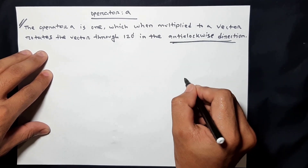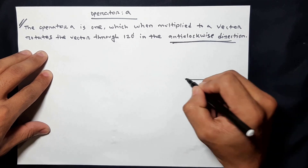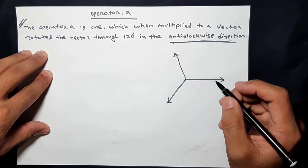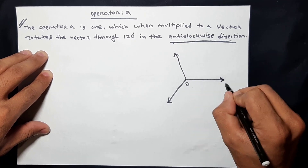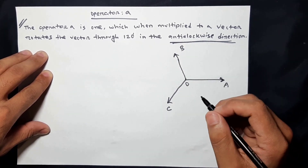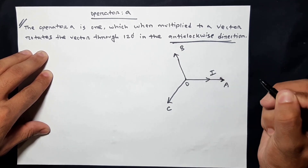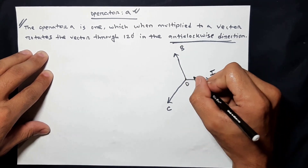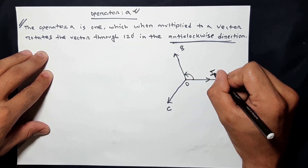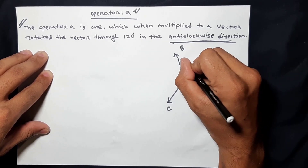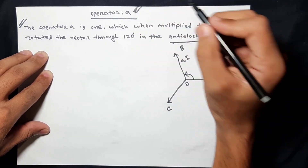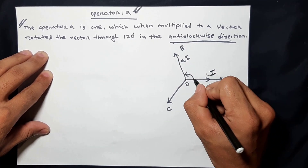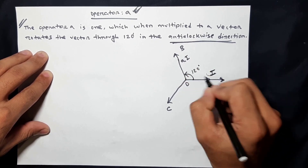Suppose we have a symmetrical system. What does A mean? When we look at the vector, we can rotate the vector — it rotates 120 degrees in the anticlockwise direction. If we apply A again, there is another 120 degrees anticlockwise rotation. It will rotate the vector, then rotate the vector again, back to the same position.